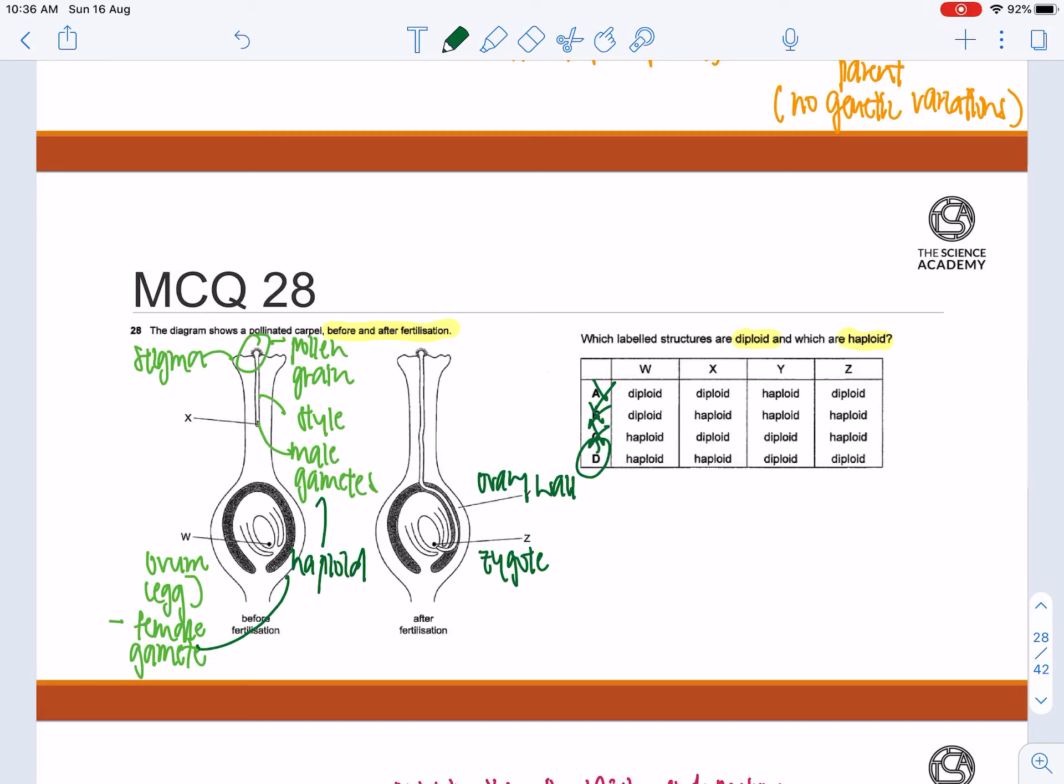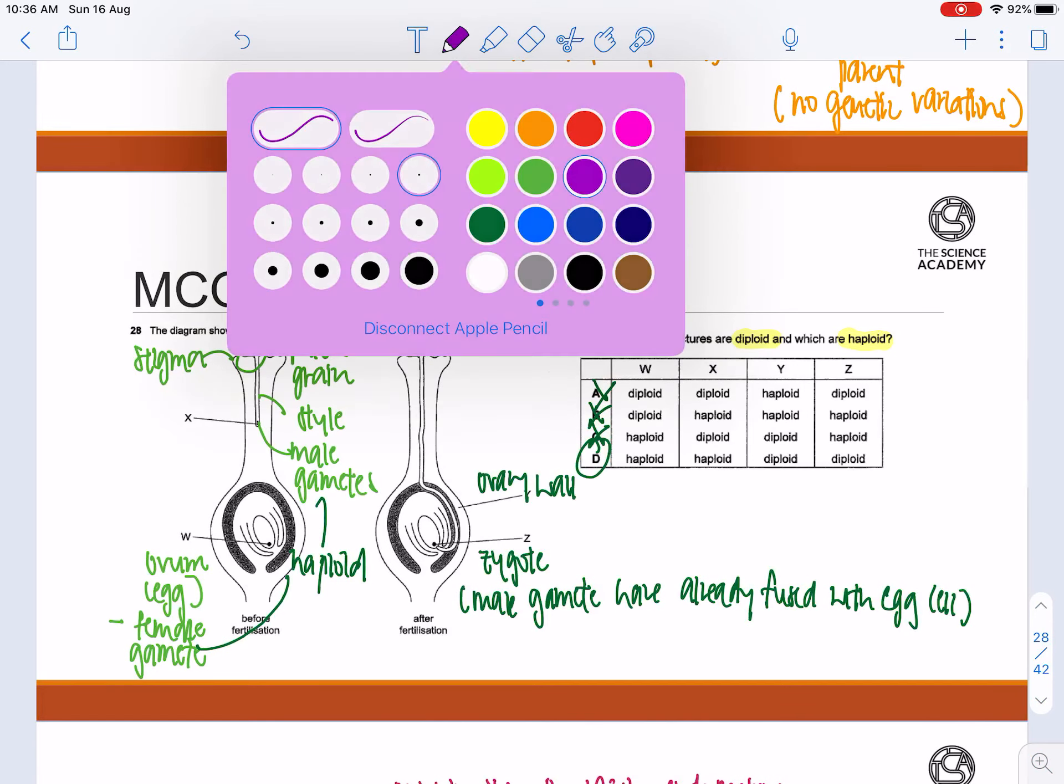So after fertilization, the male gametes have already fused with the egg cell. Hence, this will actually form our diploid cells.